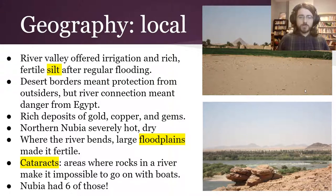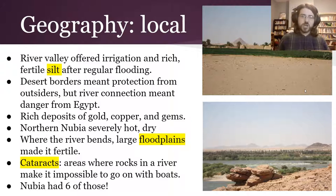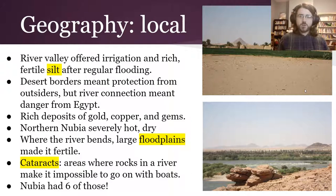Northern Nubia, in particular, is really severely hot and dry, which means that in order to have enough water, you either need irrigation directly from the river, or they were able to build reservoirs and catch rainwater. Where the river bends, there are particularly large floodplains, which made it fertile, so a lot of settlements were focused in those areas. One of the reasons it became such a powerful trade force was that it had these things called cataracts.